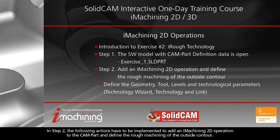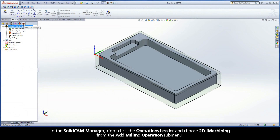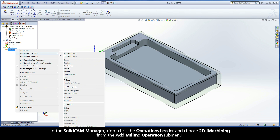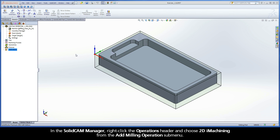In step two, the following actions have to be implemented to add an iMachining 2D operation to the CAMPART and define the rough machining of the outside contour. In the SOLIDCAM Manager, right-click the Operations header and choose 2D iMachining from the Add Milling Operations submenu.